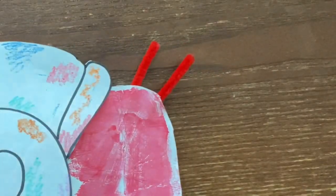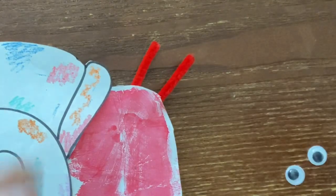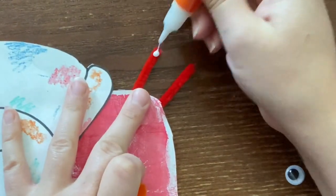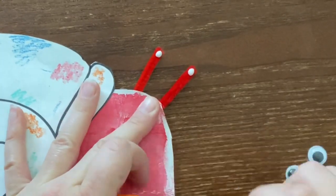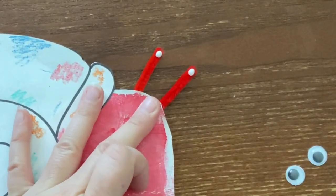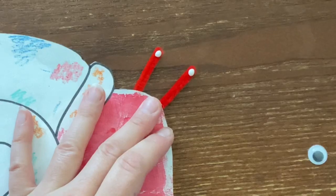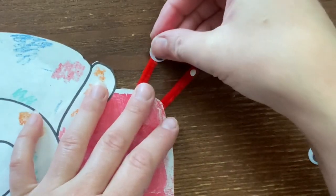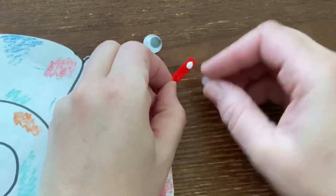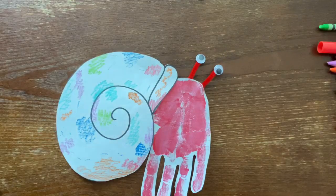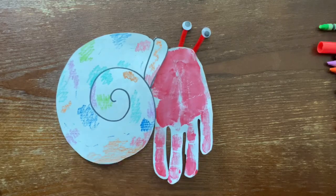Since those are done, I'm going to go ahead and take out my googly eyes and my glue. I'm going to put a little glue on each tip and grab a googly eye and press. And then you are all done with your hermit crab.